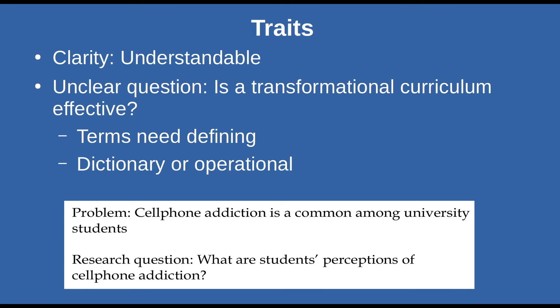Another trait is clarity — how understandable the research question is. An example of an unclear question is: is a transformational curriculum effective? The problem is: what does 'transformational' mean? If you don't explain it in the question, it needs to be somewhere within your paper. What do you mean by 'effective'? You might not put it in the question, but you need to define it somewhere. Taken out of context, this question is unclear, though with appropriate tools in your paper you can salvage it.